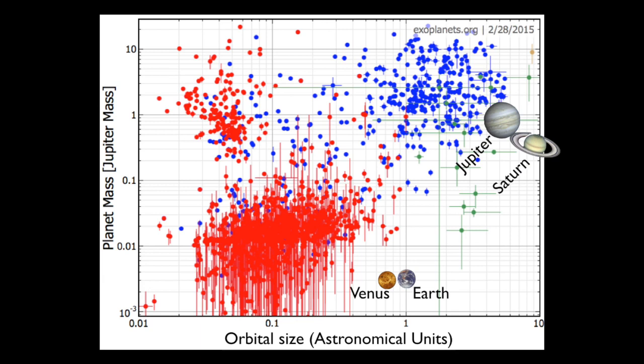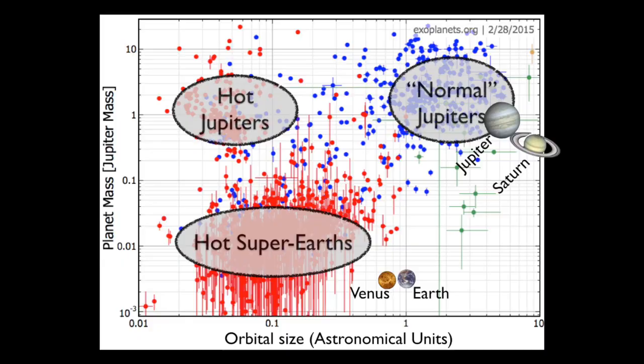The next step is to ask how common are Jupiters. This plot shows the distribution of known planets around other stars. Each dot is a specific planet - the vertical axis shows the planet's mass, the horizontal axis shows the size of its orbit. The color corresponds to the technique used to find it. We can divide this plot into different clumps.